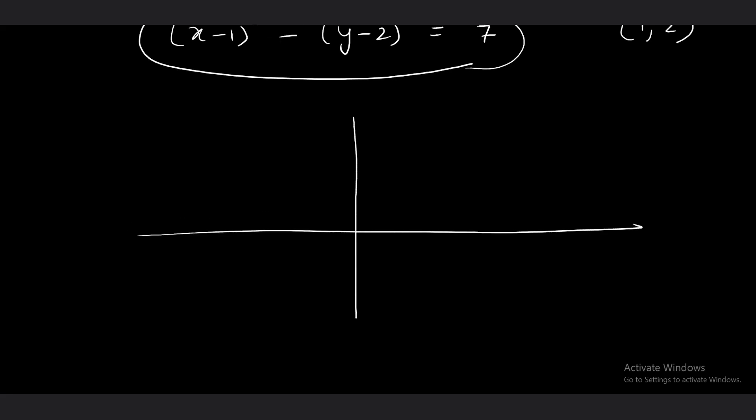See, the hyperbola's center is, the center we have been given is (1, 2). Now, I am going to trace its asymptotes also. So, what are going to be the asymptotes of this hyperbola?